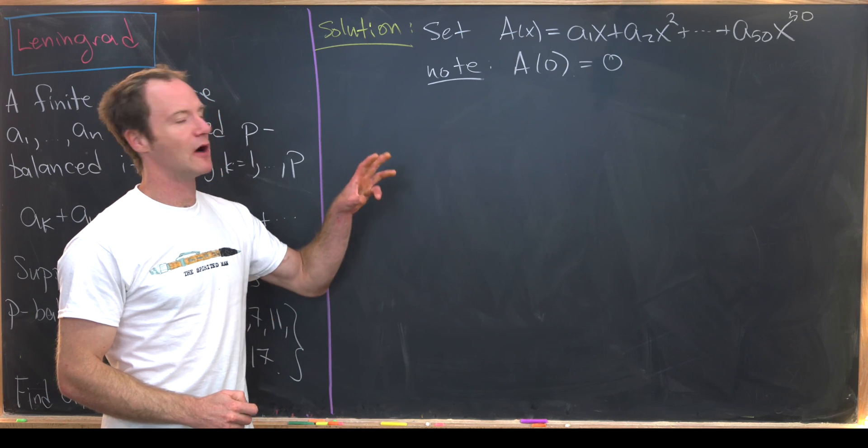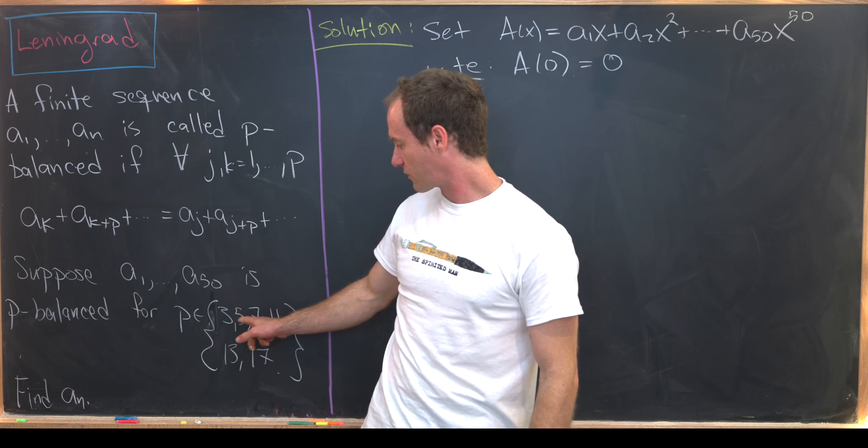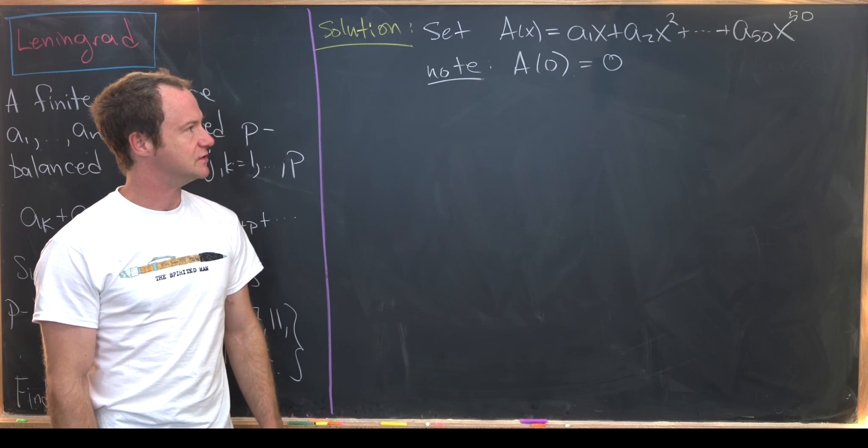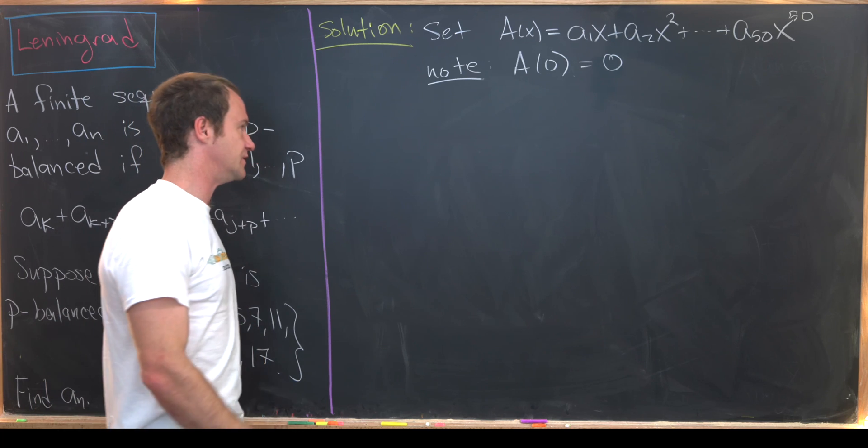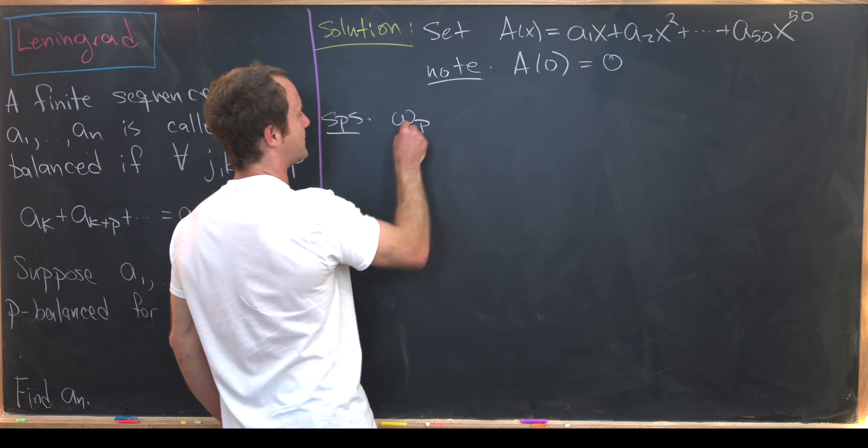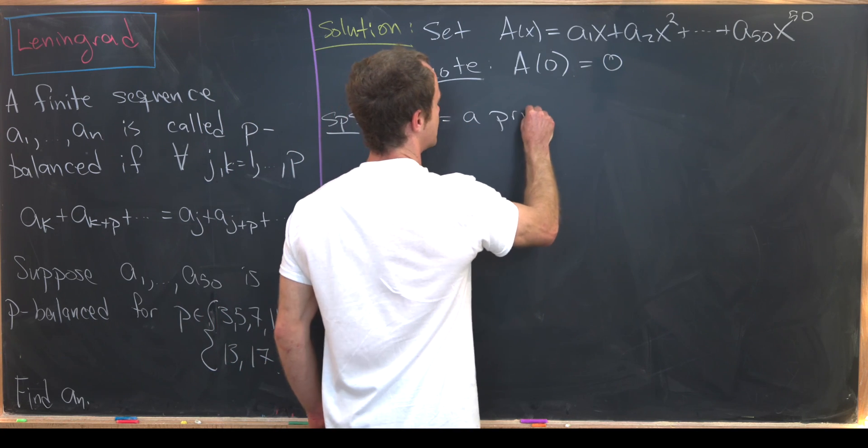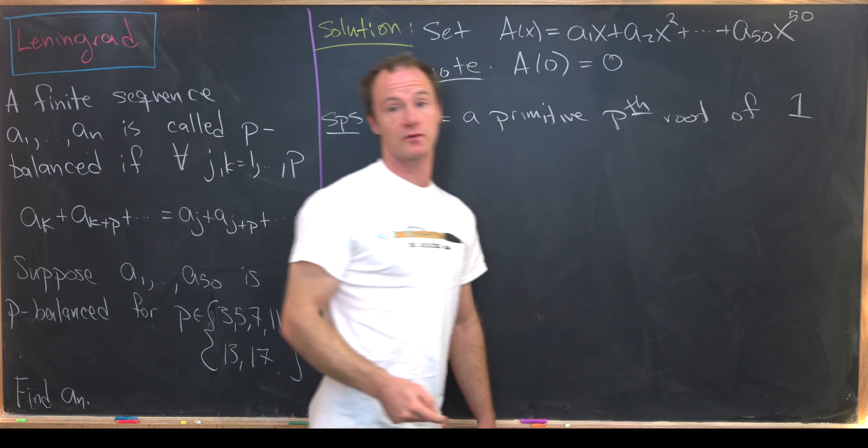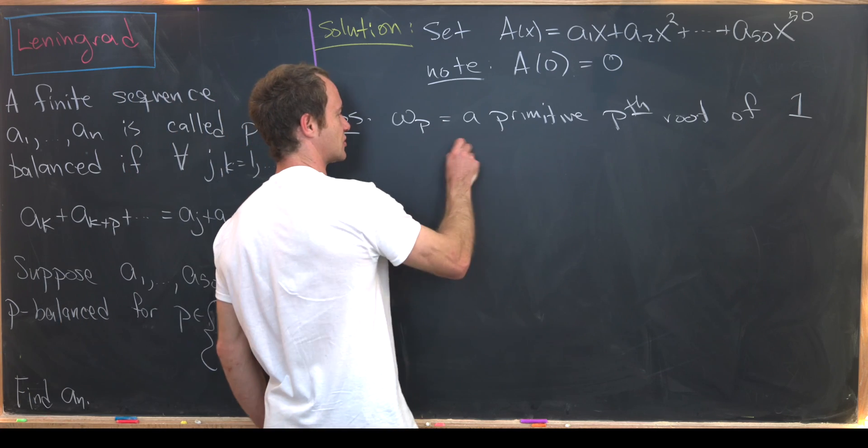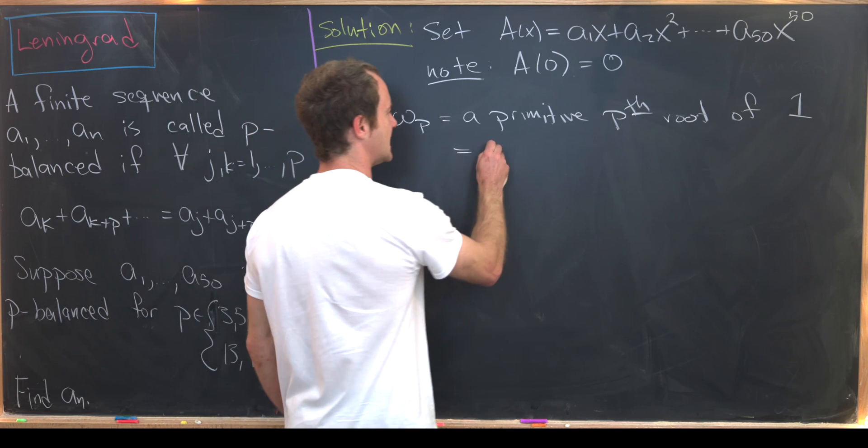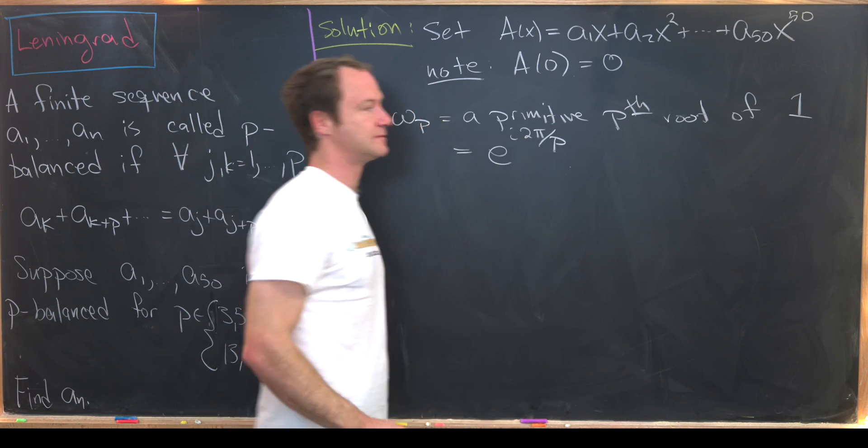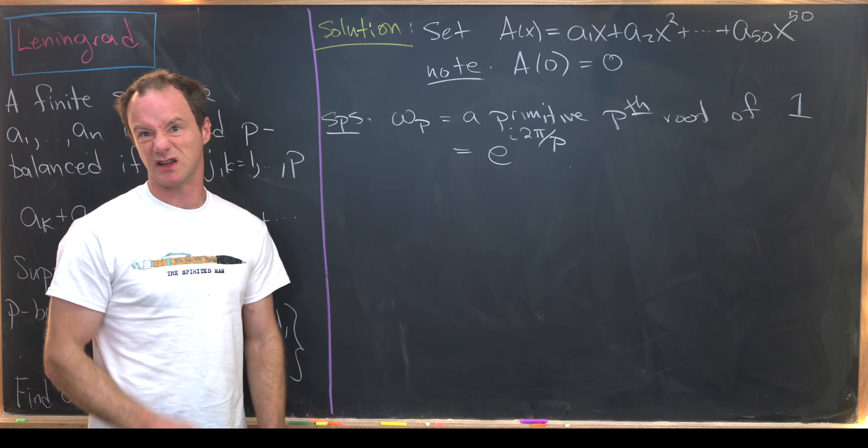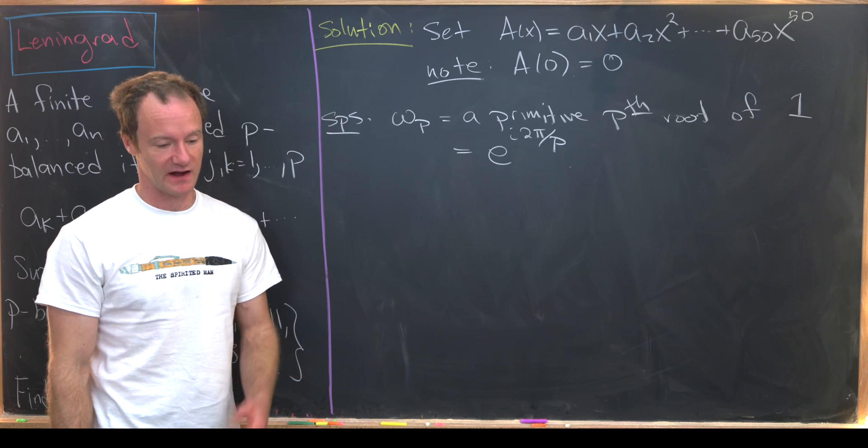Now somehow we want to use this notion of p-balanced for p equals 3, 5, 7, so on and so forth along with this polynomial. How can we do that? Well we can do that using roots of unity. Let's suppose that omega_p is a primitive pth root of unity, in other words a pth root of the number one. We could take a certain pth root of the number one to be like e to the i 2 pi over p. I'll let you guys look up what it means to be a primitive root of unity.